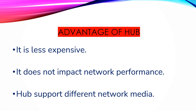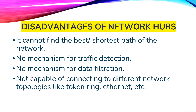The disadvantages of hub are: the shortest or best path for data transmission is not found. There is no mechanism for traffic detection. It does not support data filtration. Sometimes all nodes connected to the network transmit data simultaneously. It is not capable of connecting to different types of network topologies.